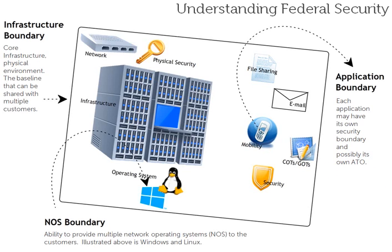Understanding federal security boundaries is critical when we're trying to develop an environment that can be run in the federal government, that we can receive an authority to operate, we can receive FedRAMP or DICAP or FISMA or any one of these certifications. They all require us to think about the way we're going to do security. Illustrated here, you'll see that there are multiple boundaries, and we're going to talk today about boundaries in the application of security in the federal government.